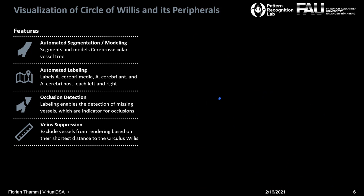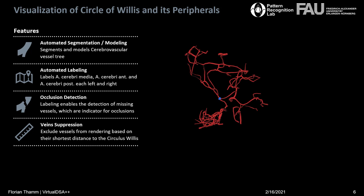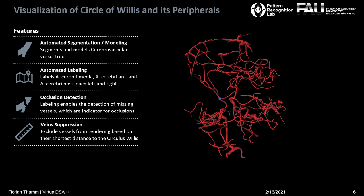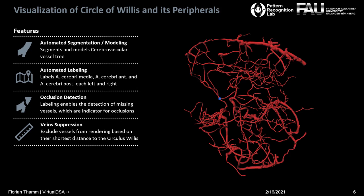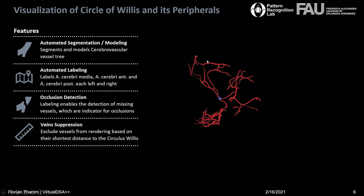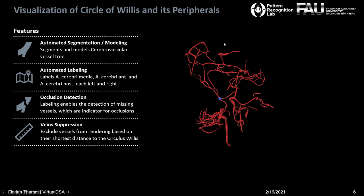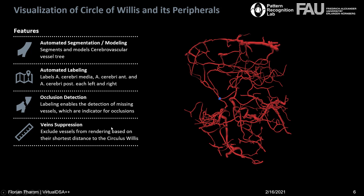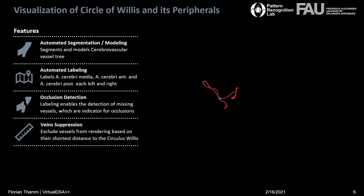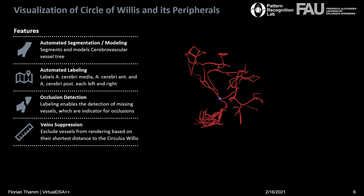It also leads to a feature we call vein suppression, which tackles a common problem in visualization. You don't really need the whole tree. For instance, this bow-shaped structure, the sinus sagitalis, is neglectable in stroke diagnosis. Thus, it makes sense to exclude it.